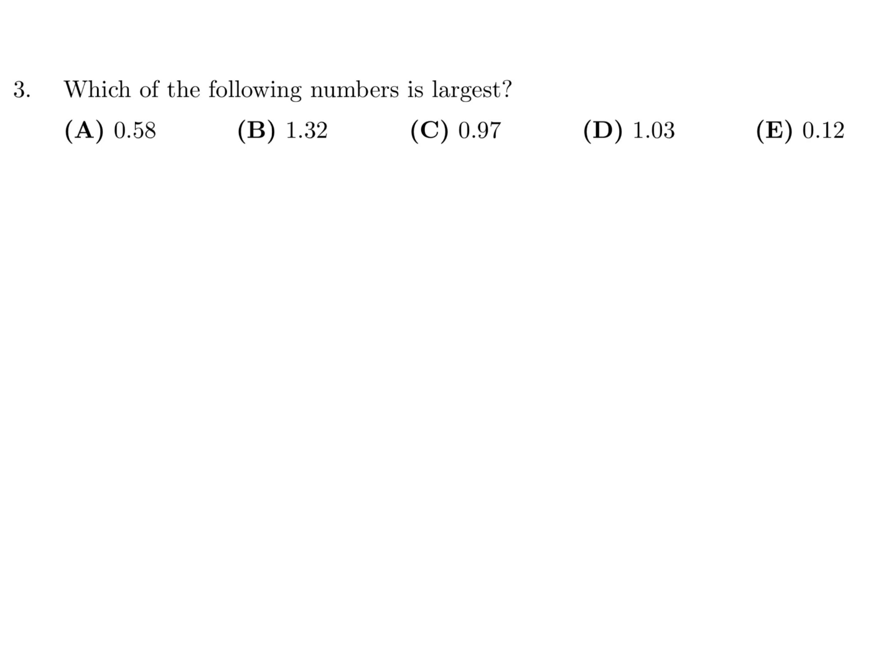Which of the following numbers is the largest? Well this is less than 1, this is less than 1, this is less than 1. This is greater than 1, that's greater than 1. So we're down to B and D, and of those, 1.32 is greater than 1.03, and therefore the largest of the whole group would be B for number 3.